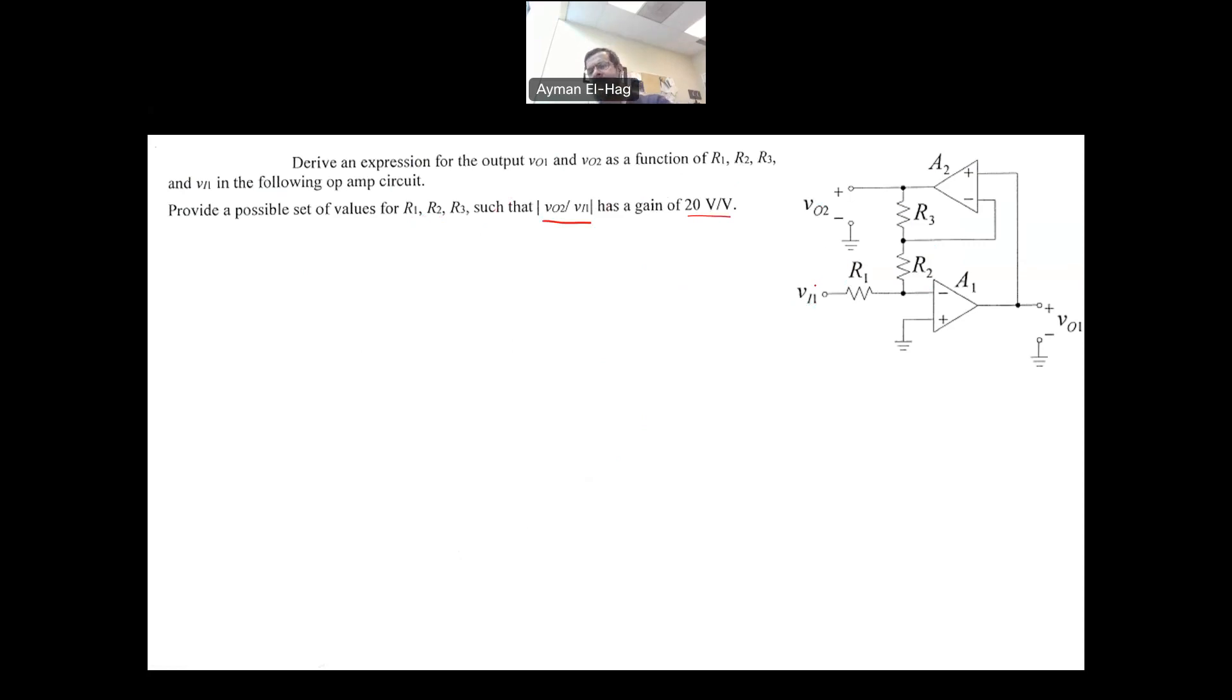So what does an ideal op-amp mean? That means two things. That the currents that enter the op-amp, IN for negative equal to 0, IP equal to 0. Same thing here, IP equal to 0 and IN equal to 0. So the bias currents are equal to 0.